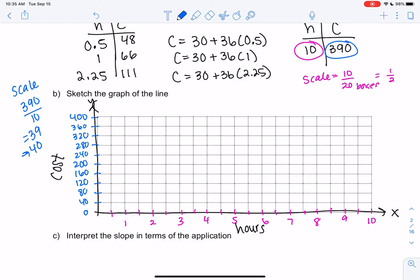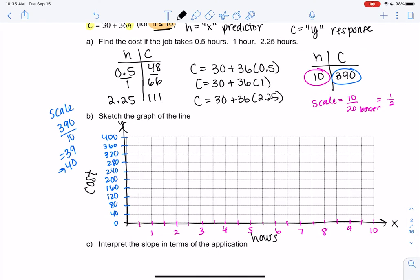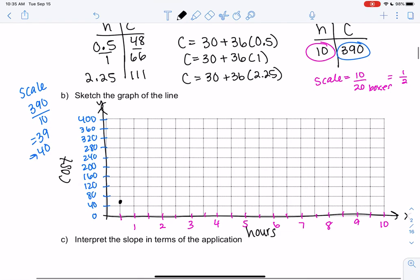So once you're ready, we're going to go ahead and plot points. So our first point is a half and 48. So a half and 48. We just estimate that's okay that the numbers don't all show up. It's a little bit more than 40. We get 1 and 66. So 1 and 66 is maybe right there. Right, we're estimating, and that's okay. 2.25 is halfway between 2 and 2.5. Up to 111 would be slightly under 120. And then the 10 will help us draw a good line. So 10 and 390. So this one.